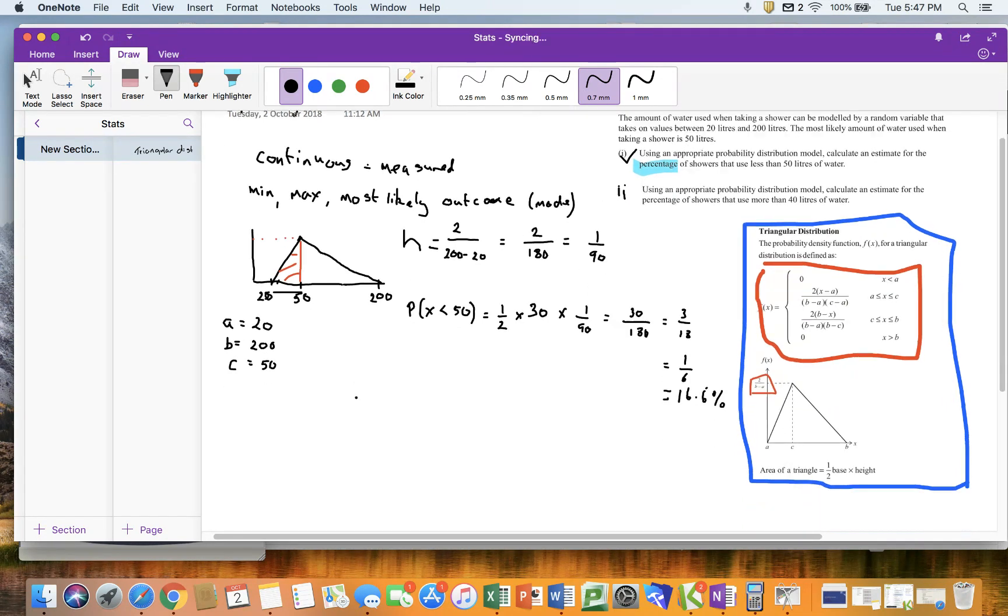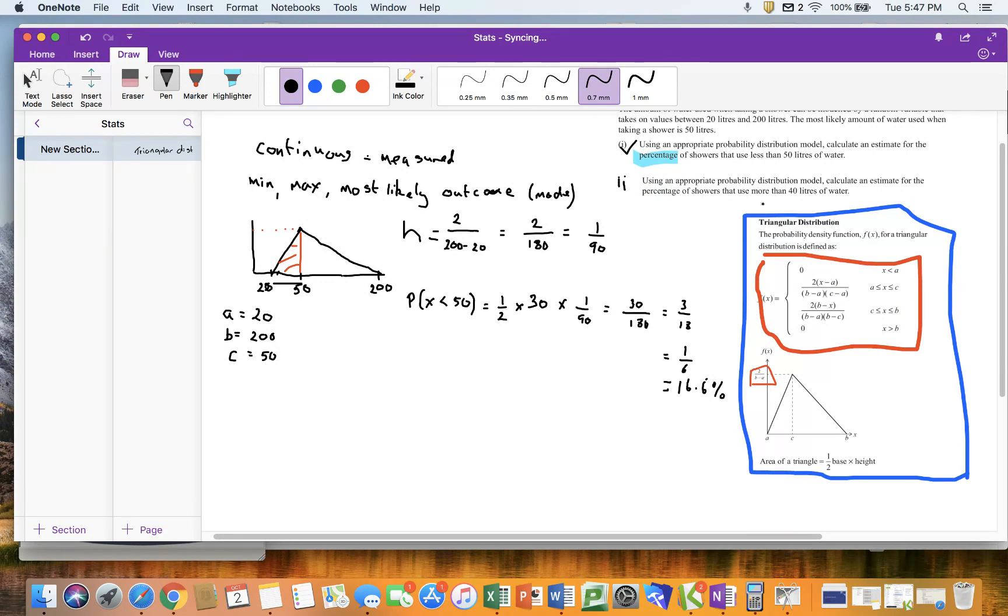Okay. So the second problem was probability and estimate. The percentage of showers use more than 40 litres. So what I'm going to do is I'm going to draw myself a new picture. It's a lot easier doing this, having drawn the triangle. So I'm going to cheat and do it that way round. So therefore, that is 20. That is 50. That is 200. It really doesn't matter too much about the scale. That is 40.